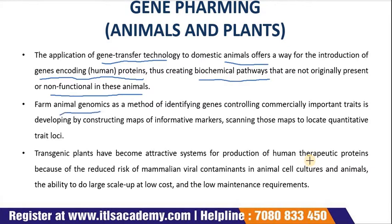Farm animal genomics is a method of identifying genes controlling commercially important traits, developed by constructing maps of informative markers and scanning those maps to locate the quantitative trait loci. Once the trait loci is located, it becomes easier to identify the trait genes themselves, and finally bridging the gaps between genes and the ultimate selected trait.